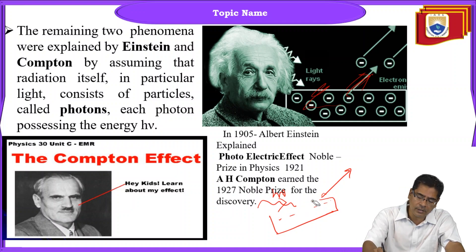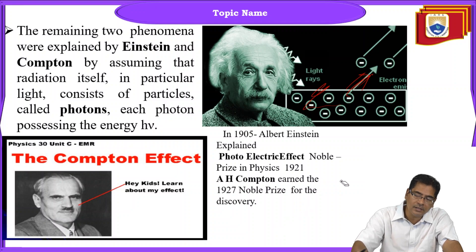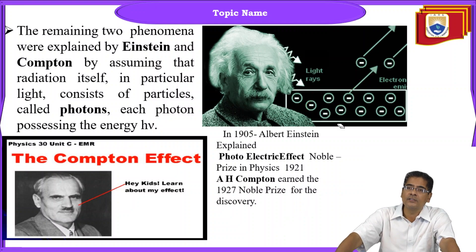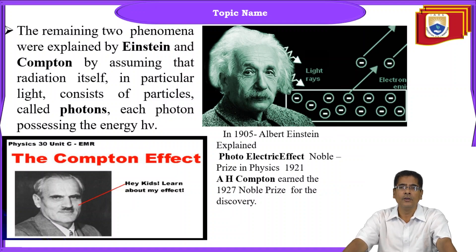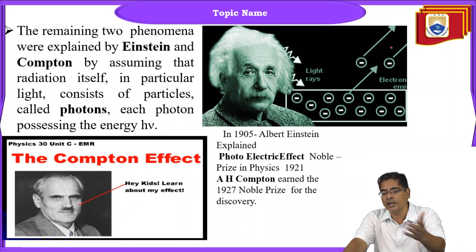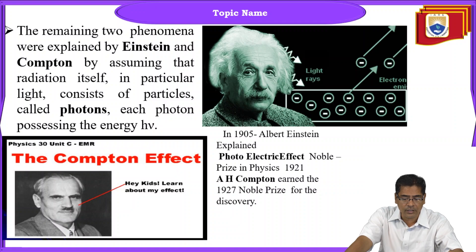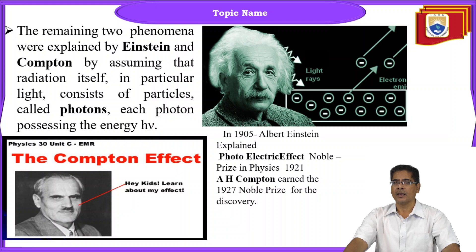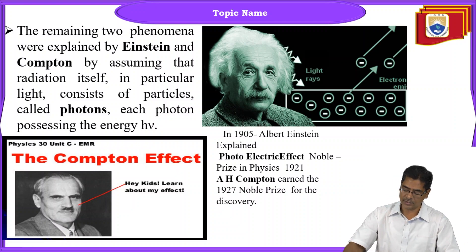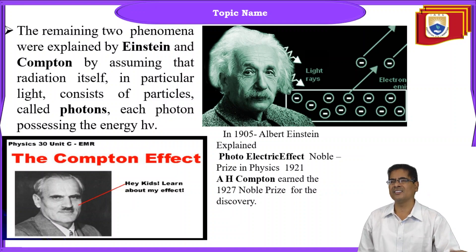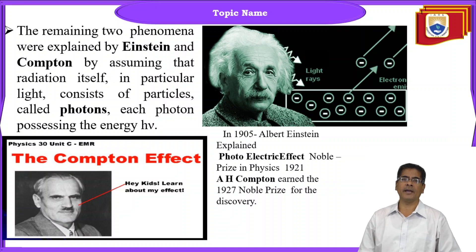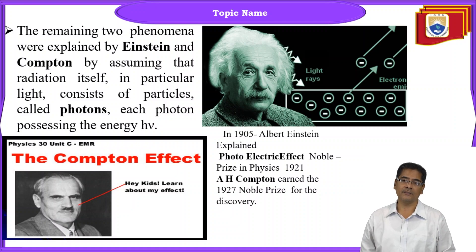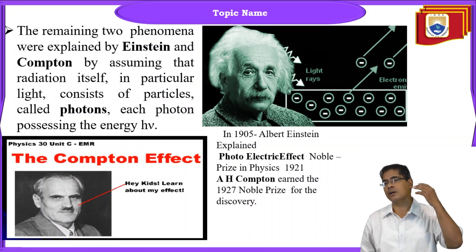The photoelectric effect fundamentally states that when light of certain frequency falls on a metal, liberation of electrons takes place from the surface of the metal. The Compton effect is also one of the essential causes for the existence of quantum mechanics. These are the various phenomena where classical physics faced challenges and could not be proved, leading people to migrate to quantum mechanics.